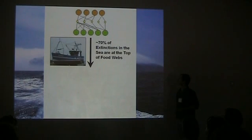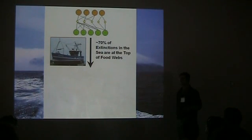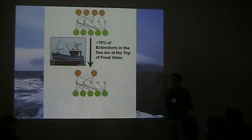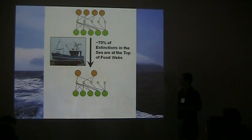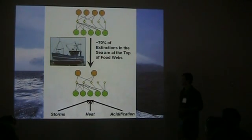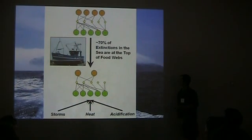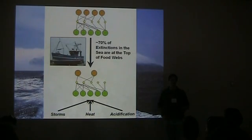Part of my dissertation really looked at the fact that 70% of extinctions in the world, local or global, have been top predators. So you're getting food webs that look more and more like this. And this has tremendous implications for the adaptive potential of marine ecosystems to various impacts of climate change — storms, heat, acidification, and more. We're really looking at what the adaptive potential of these food webs is going to be after the loss of predators.